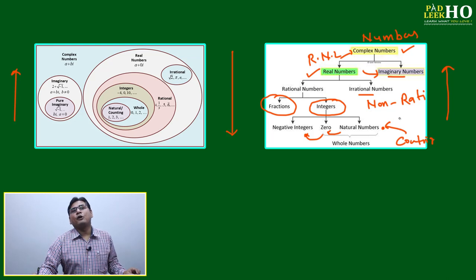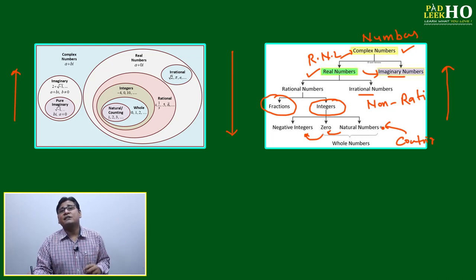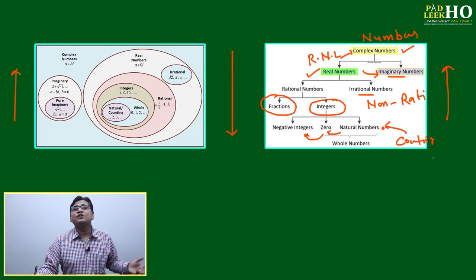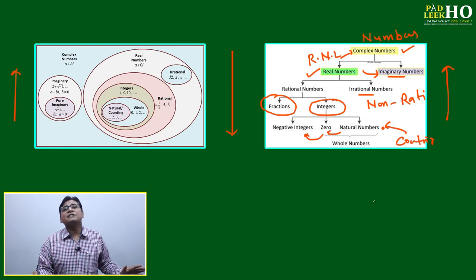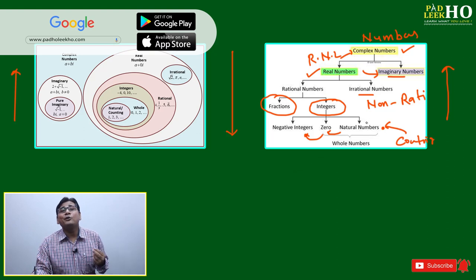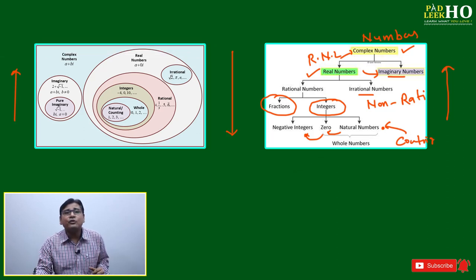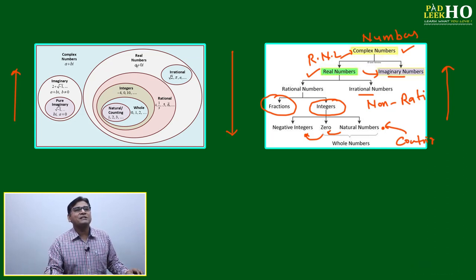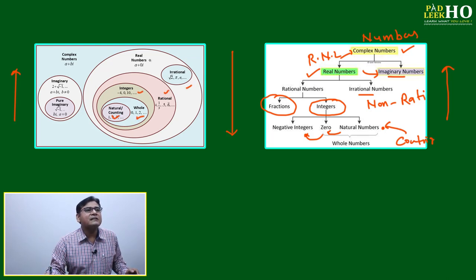If you read from top to bottom — numbers classified as real, imaginary — you will never understand; you will just memorize definitions. What is rational number? A number representable as p by q where p and q are integers. What is irrational? A number that cannot be represented as p by q. These are just mugged-up definitions. Instead, go from bottom to top to understand. In the Venn diagram representation: natural number, counting, whole number, integers, rational, irrational — all are real number. Imaginary number is separate.